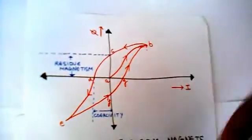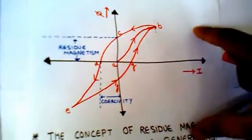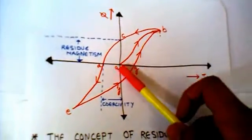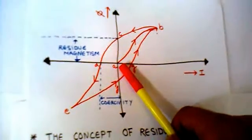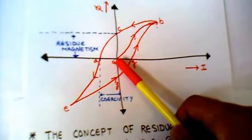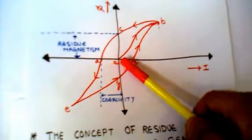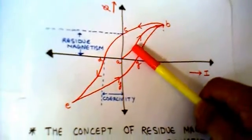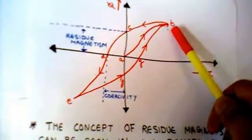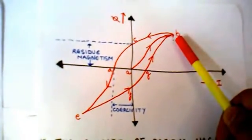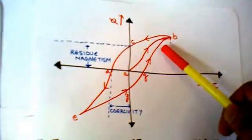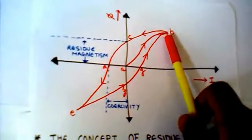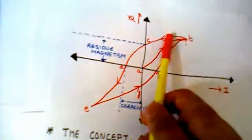This whole concept has been summarized by the BH curve. Normally, your material is at the origin if you have never exposed it to current — that means the piece of material is a virgin. If you keep on increasing the value of current, the value of flux keeps on increasing. Then comes the point B, where your piece of material has been saturated. Even if you increase the current beyond point B, your flux will not increase — it has become constant.